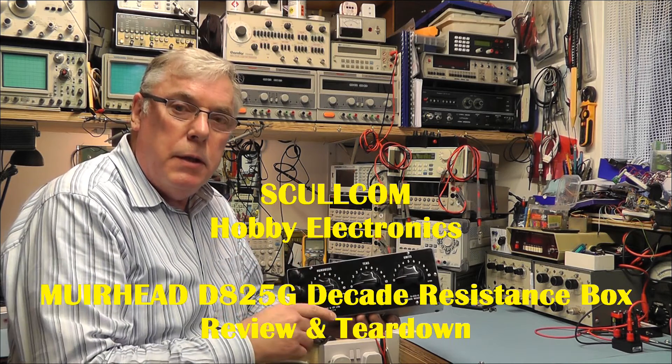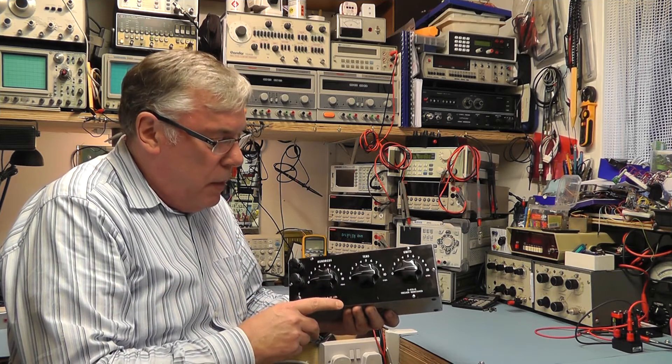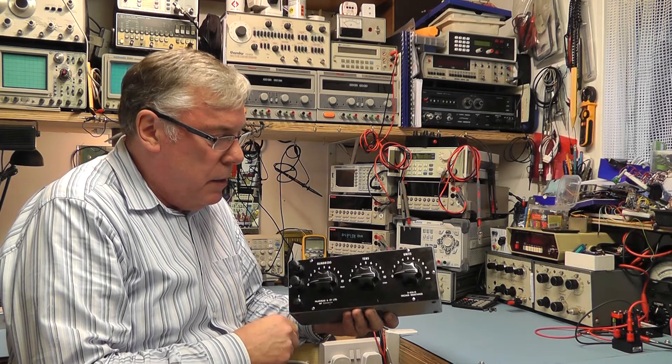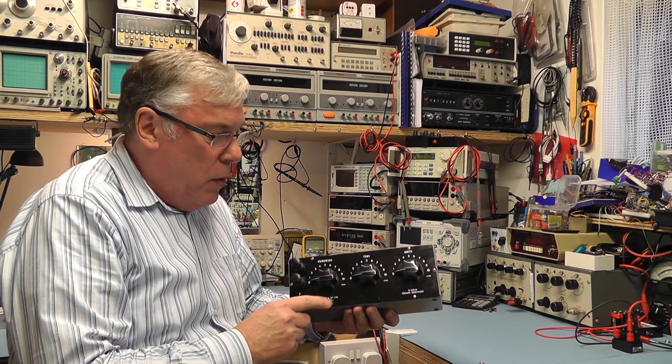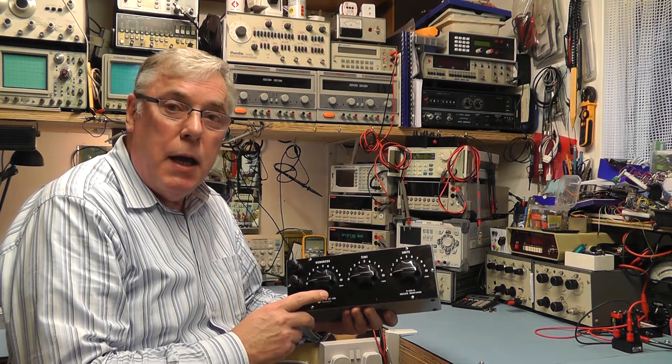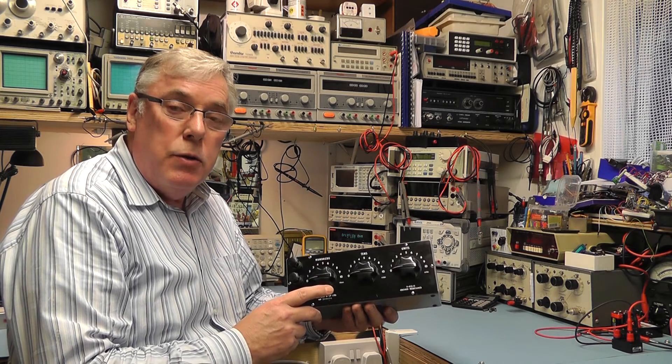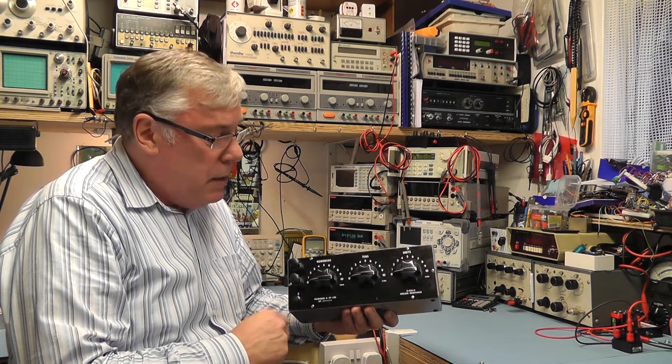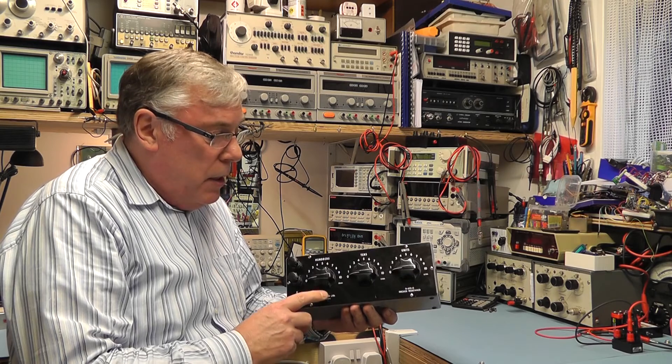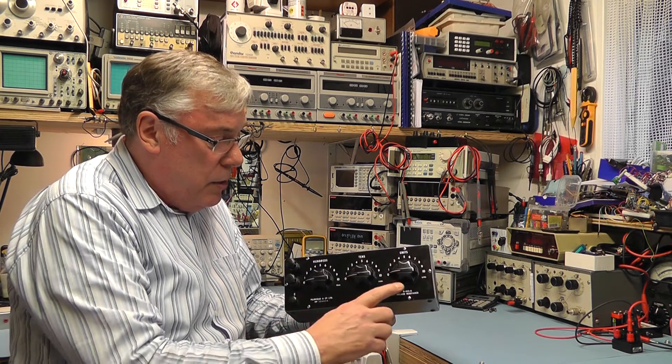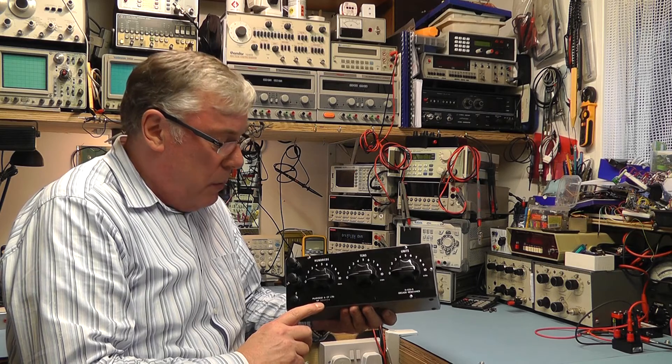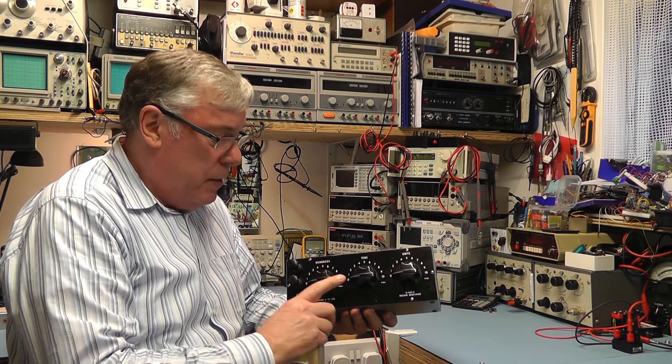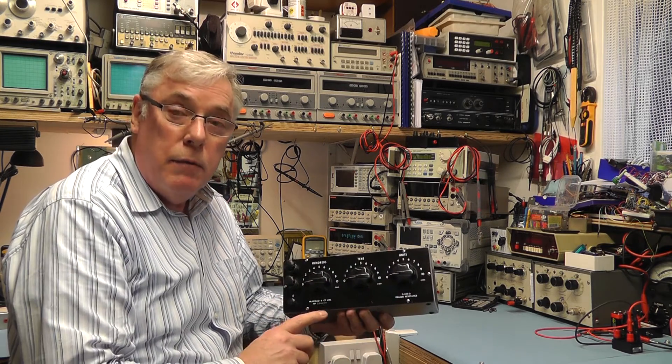Hi everyone. Today we're going to have a look at the Muirhead decade resistance unit here. Muirhead made a number of these decade resistance boxes during the 50s and 60s. This particular unit is a three channel decade resistance box covering hundreds, tens and units of ohms.